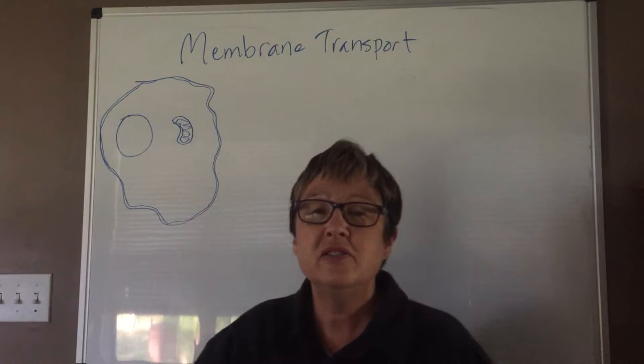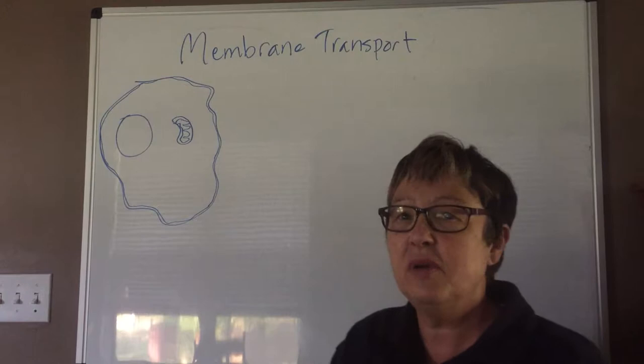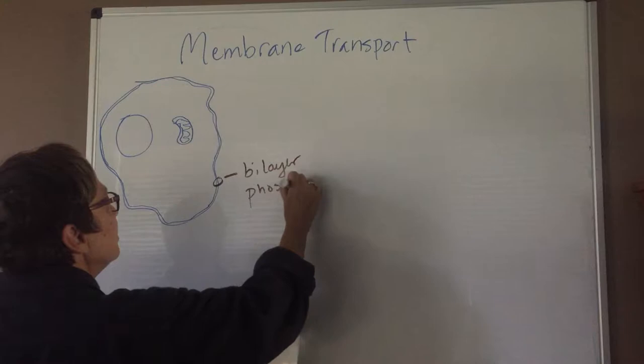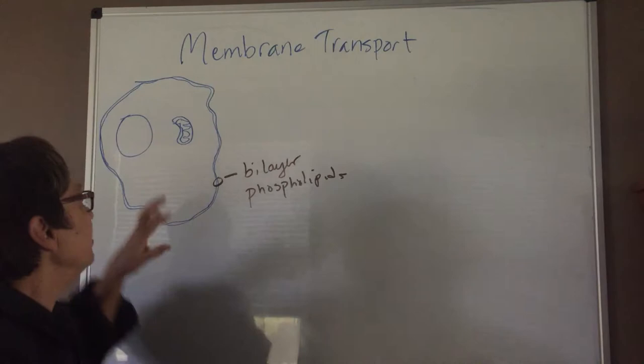This is Dr. Martin's Supplemental Lecture on Membrane Transport. We're going to talk about several ways in which the cell moves substances across the cell membrane. Just a reminder that the cell membrane is composed of a bilayer of phospholipids. I want you to think of it as a very thin layer of oil that surrounds the cytoplasm and separates the cytoplasm from the outside of the cell.